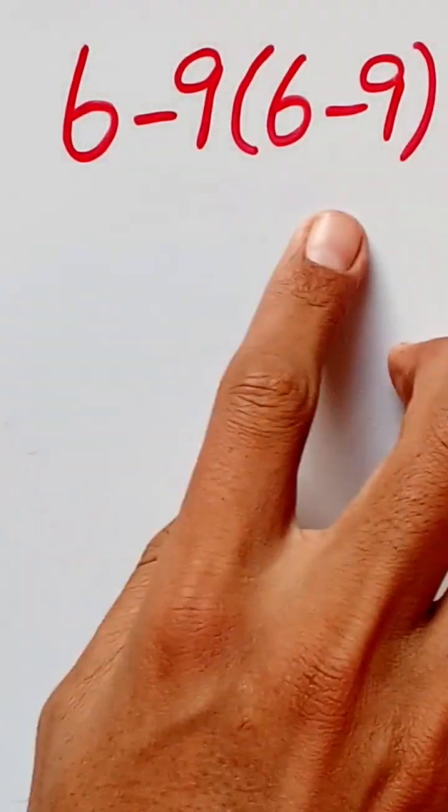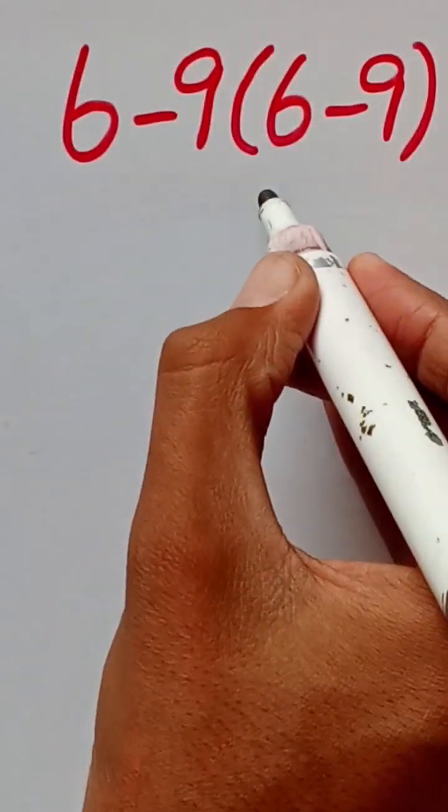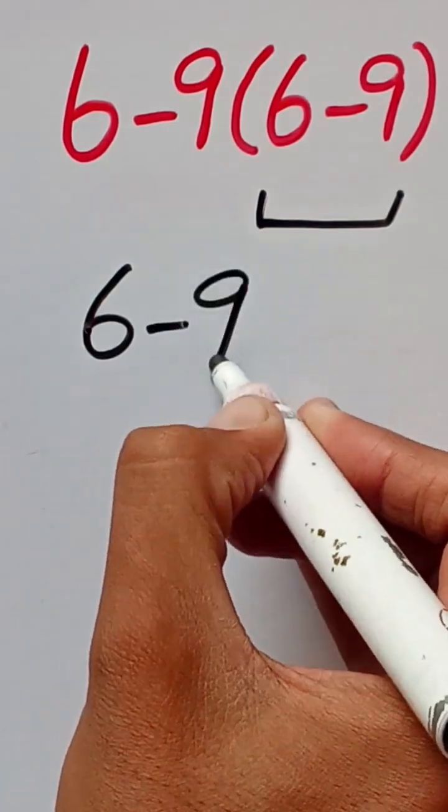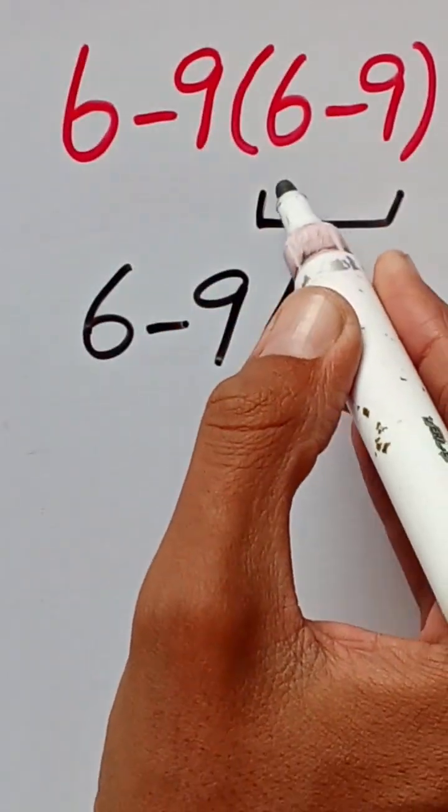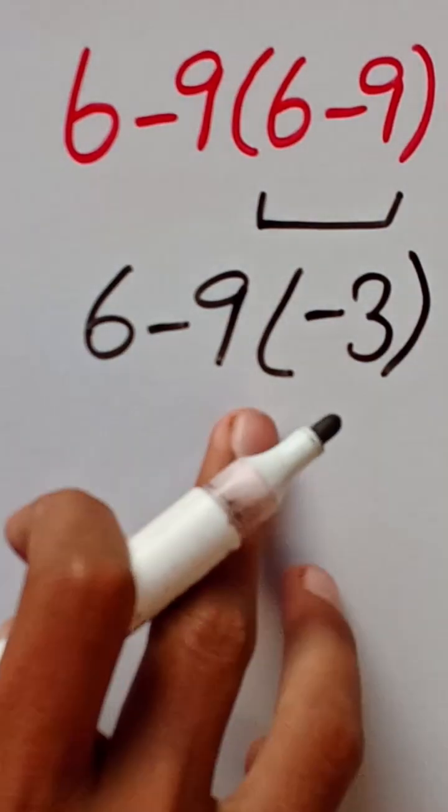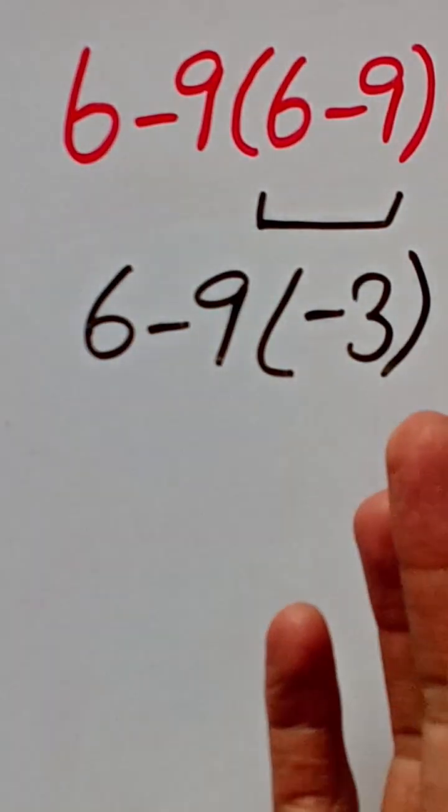whenever there are parentheses in an expression, we solve the parentheses first. So 6 minus 9, I can write as 6 minus 9 in parentheses, which equals negative 3. Now here we have one multiplication and one subtraction. According to the rule of PEMDAS...